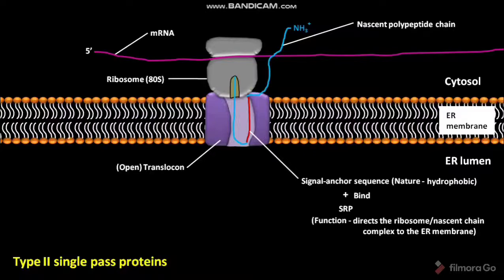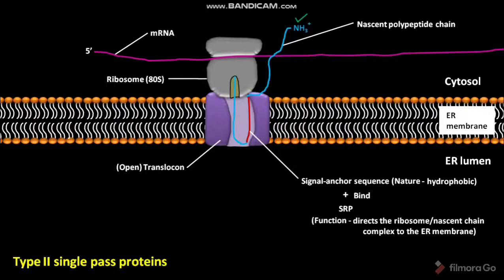The signal anchor sequence in type II single-pass proteins acts as an ER signal sequence. As a result of the signal anchor sequence directing insertion of the nascent polypeptide chain into the ER membrane, the N-terminus of the nascent polypeptide chain faces the cytosol. This orientation is believed to be due to positively charged amino acids.